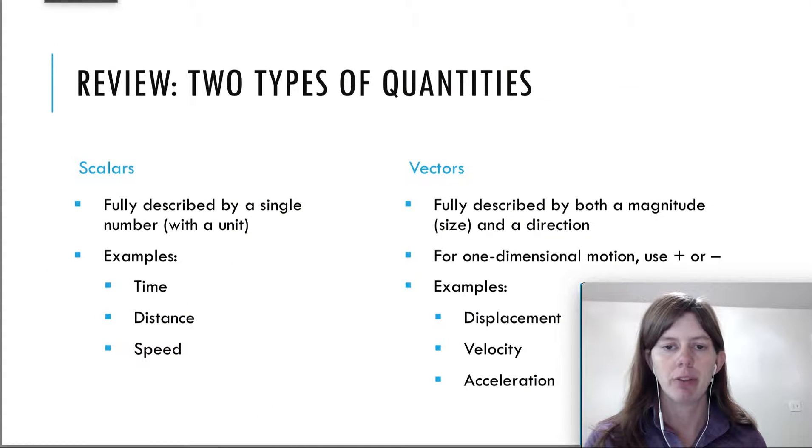This is a review slide we've seen before. There are two types of quantities: scalars and vectors. Scalars are fully described by a single number. Examples we've seen are time, distance, and speed. You can say five seconds, distance six meters—just a number and a unit.